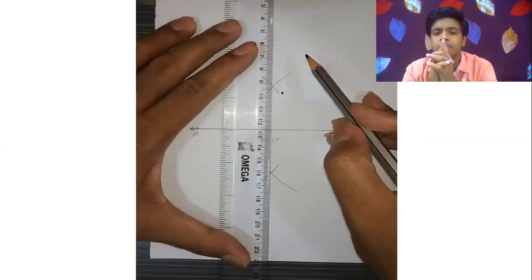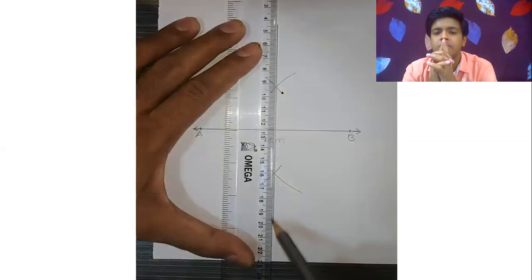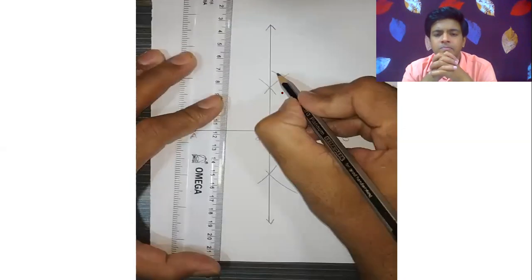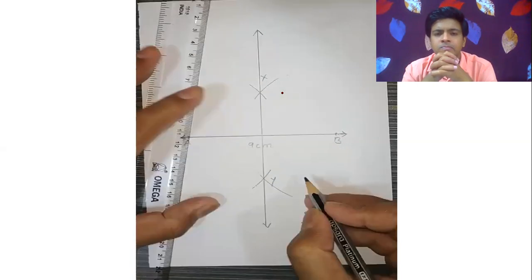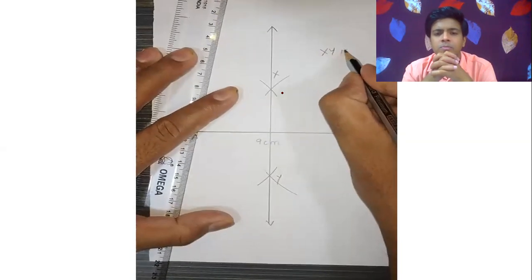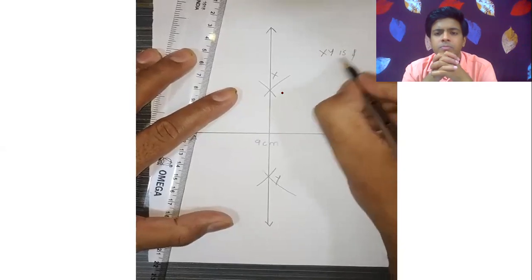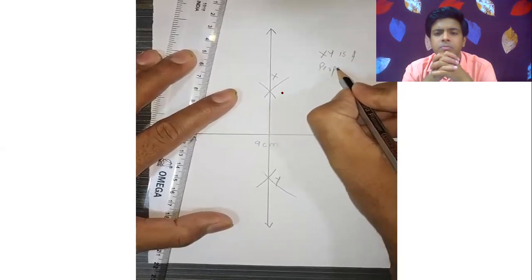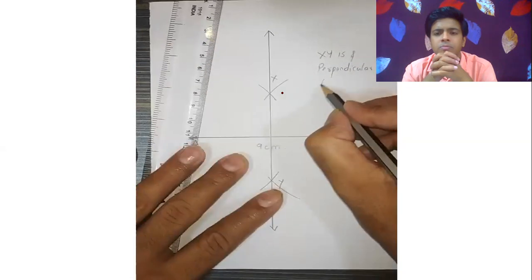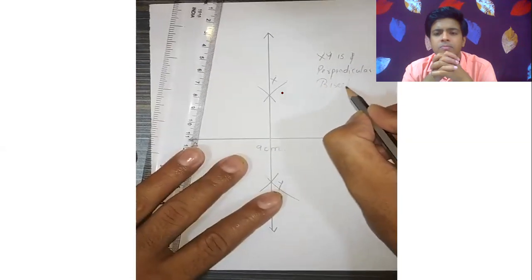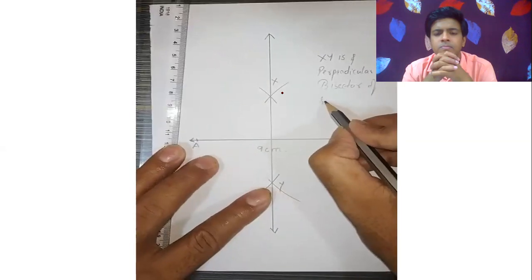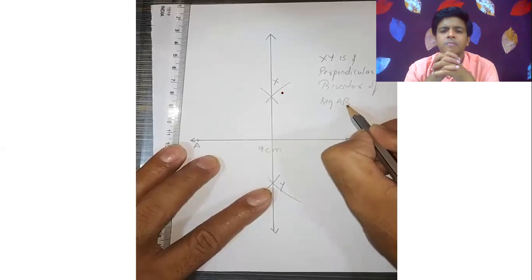Both sets of arcs will intersect at two points. Join these two intersection points and you get line XY. So XY is the perpendicular bisector of line segment AB.